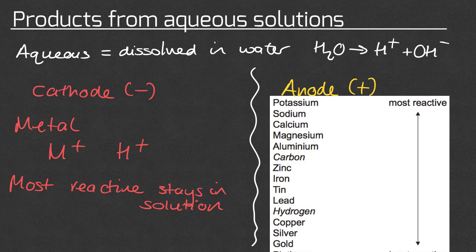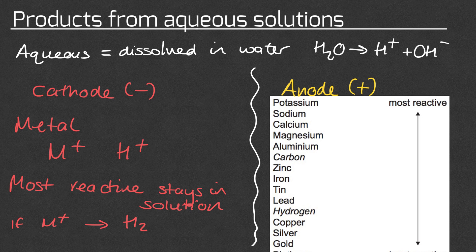The table also includes carbon and hydrogen. We need to know whether hydrogen is more or less reactive than the metals. If the metal is more reactive, the metal will stay in solution and we will produce hydrogen gas H₂. If the hydrogen is more reactive, the hydrogen ions will stay in solution and we will form the metal at the electrode.